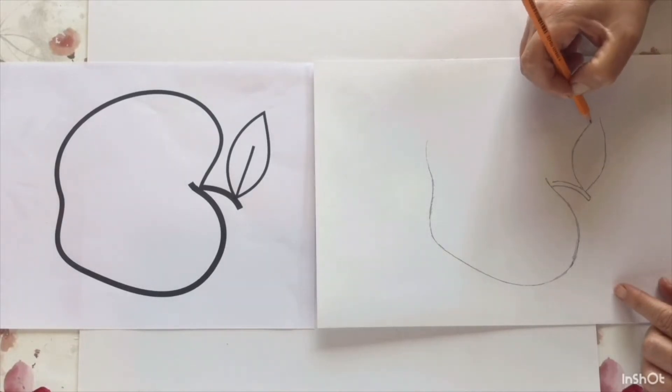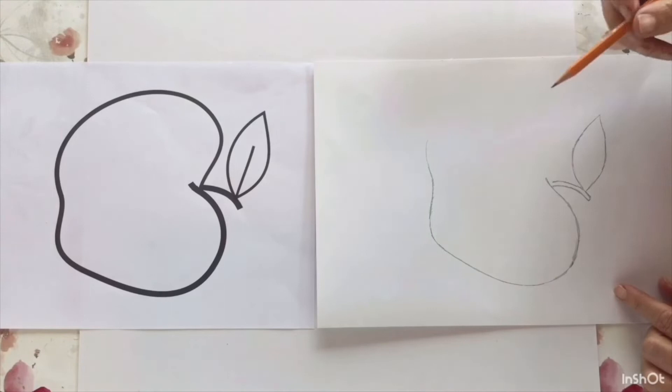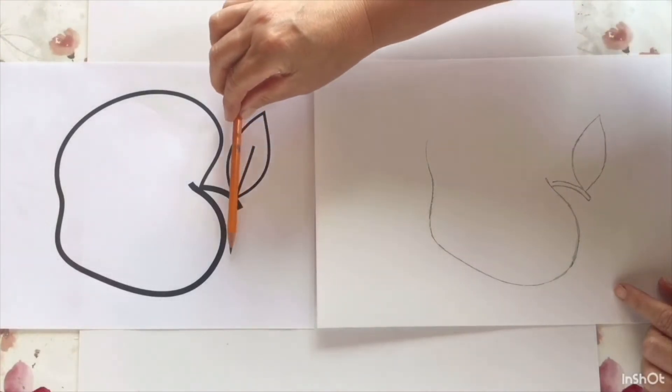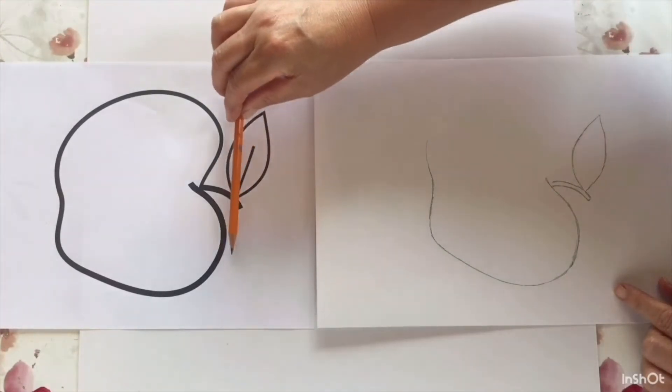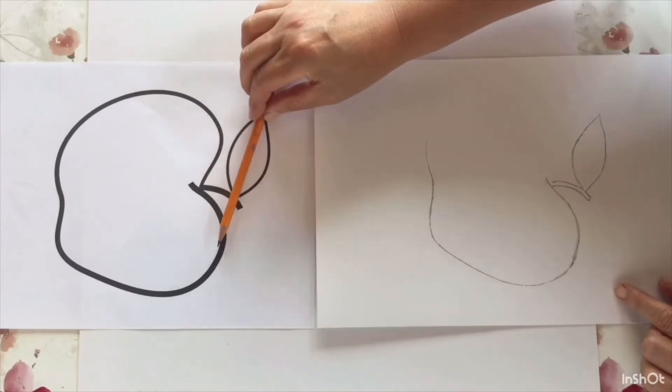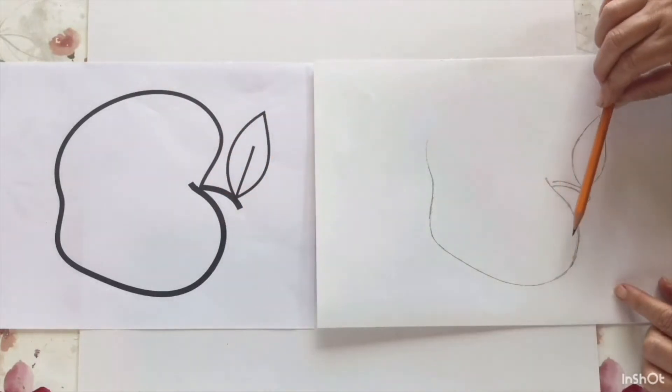A good way to measure the angle of something is to place your pencil at a horizontal line and tilt it until it matches the angle. You can then repeat that on your drawing. I find this really helps.